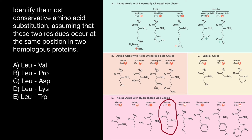The backbone in each amino acid is the same, and only the R chain specifies the properties of the amino acid. Now let me start with the end of this list — variant E, leucine and tryptophan. Here's our leucine and here's tryptophan. As you see, their R groups are very different. Tryptophan, though being in the same category of hydrophobic amino acids, has a very large R group, much larger than leucine. So we can say that such substitution will destabilize the protein and is not very likely.